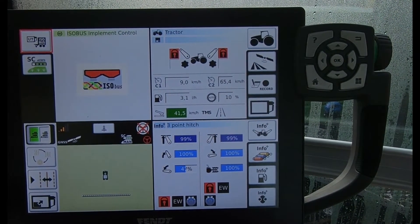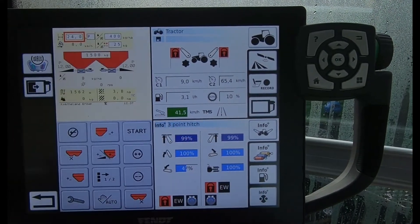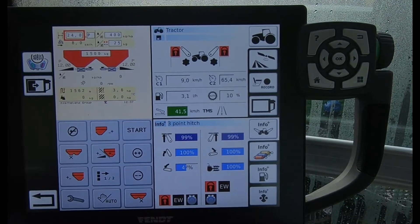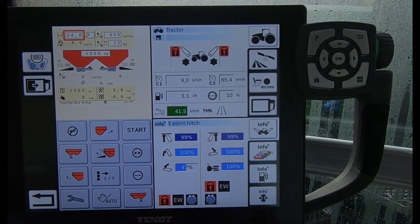I can now see my ISOBUS screen up in the top left hand corner there. So if I tap on the UT, it then brings it into this part screen mode, bringing it up half the screen there.